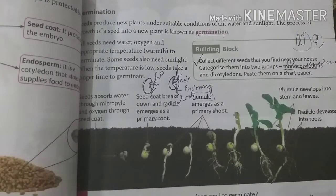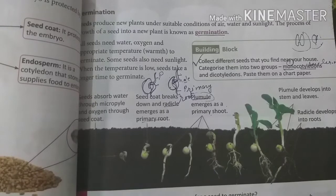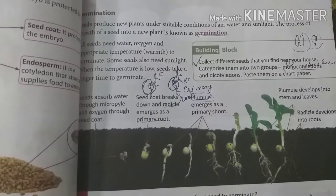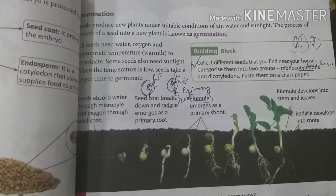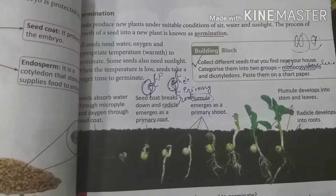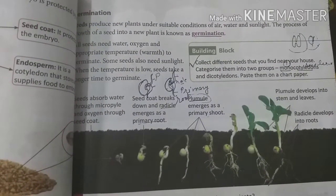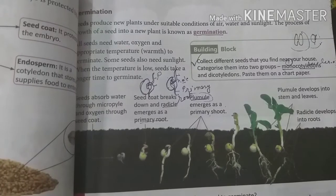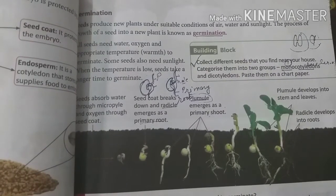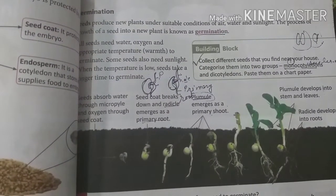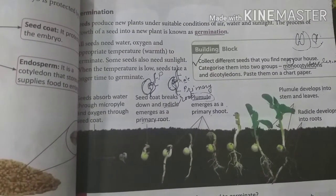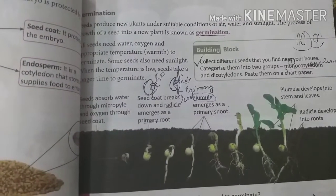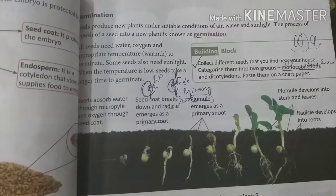Plants reproduce by different parts such as seeds, roots, leaves, stem, and flower. These are the parts by which a plant can reproduce — means convert into a new plant.